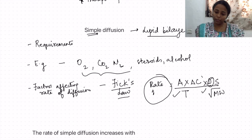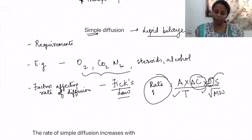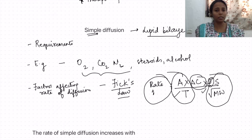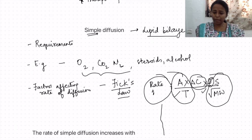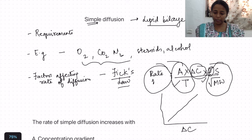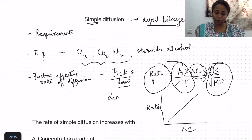Importantly, rate is directly proportional to the concentration gradient. If all other things are kept constant — membrane properties and the same substance — then the rate of diffusion will increase linearly with concentration gradient. This is known as linear kinetics. So simple diffusion follows linear kinetics.